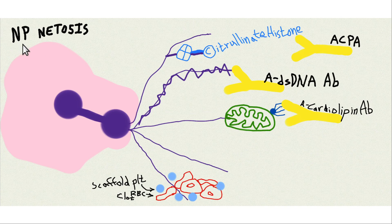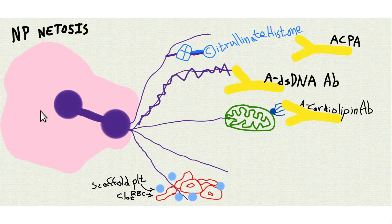This is neutrophil NETosis — NP for neutrophil. Neutrophils have a multi-lobar, poly-segmented nucleus, and part of the reason for that is so they can narrow themselves to become tubular and slide through a capillary, because neutrophils are big — about 14 microns in diameter — compared to the average capillary which is about 5 microns.